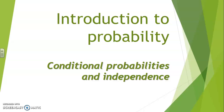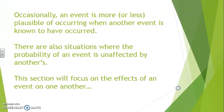Hello everyone! We are still introducing probabilities and in the last video we examined the different operations that can take place between events. We're going to go one step further today and introduce the concept of conditional probabilities and of independence. Occasionally when an event is more or less plausible of occurring, when another event is known to have occurred, we will talk about conditional probabilities. There are also situations where the probability of an event is unaffected by another's. This section will focus on the effects of an event on another.